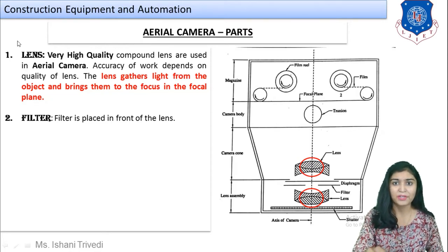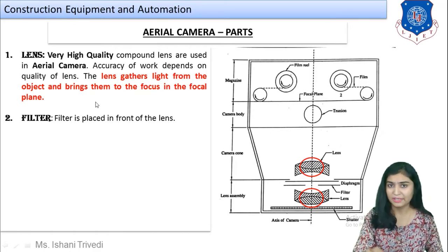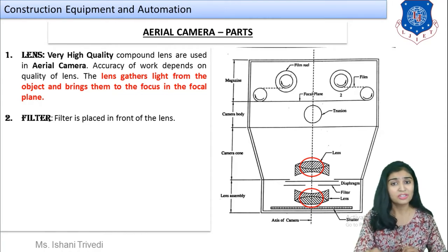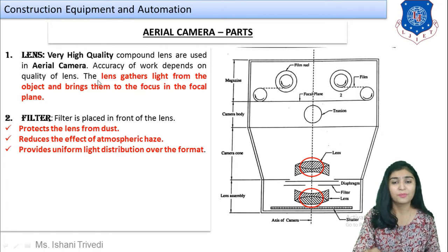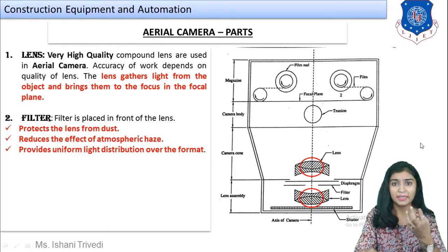The first part is the lens. A very high-quality compound lens is used in the aerial camera. Various types of lenses are available, and the accuracy of the work depends on the quality of the lens. The main function of the lens is to gather light from the object and bring it to focus in the focal plane. The lens in a camera works similarly to the lens in our eyes — gathering light and capturing the image.